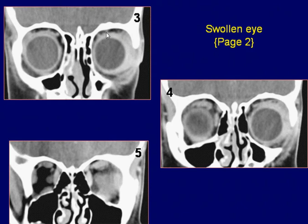Coronal post-contrast CT scans confirm the involvement of the anterior orbital soft tissues and anterior muscle cone. CT findings are consistent with orbital cellulitis.